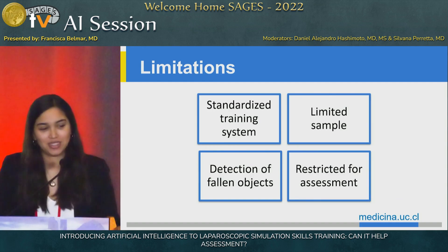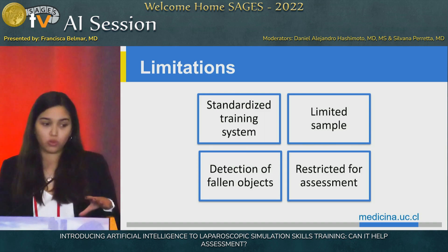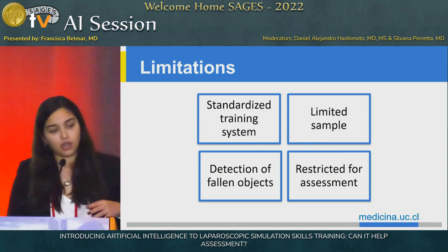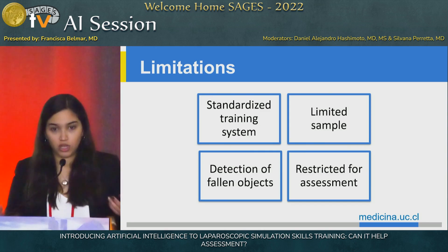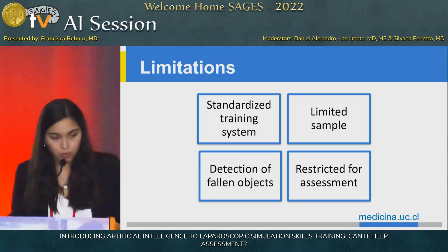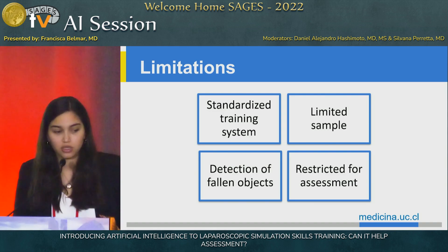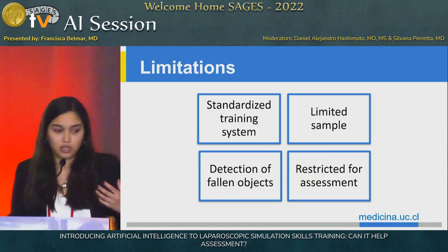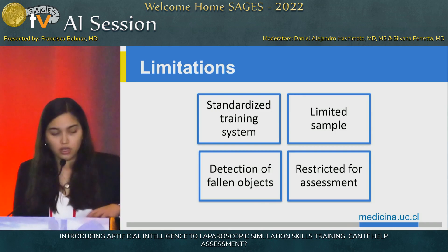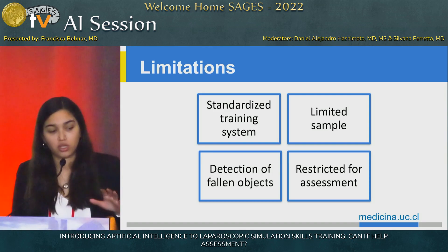The limitations of our current study include that the videos used were from a standardized training system, so we don't know if results apply to any training exercise. We used a limited sample of fewer than 500 videos per exercise. We also showed problems with detection of fallen objects, specifically in the bean drop exercise, where the algorithm wasn't precise in detecting if a bean had dropped. Currently, this algorithm can only evaluate time and determine if you pass the exercise, but it doesn't provide feedback — it is restricted to assessment only.